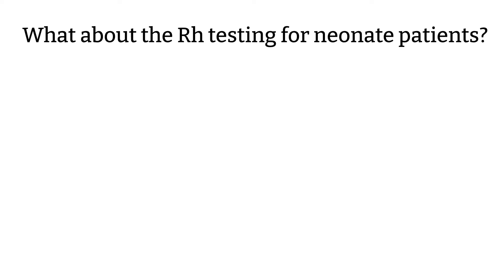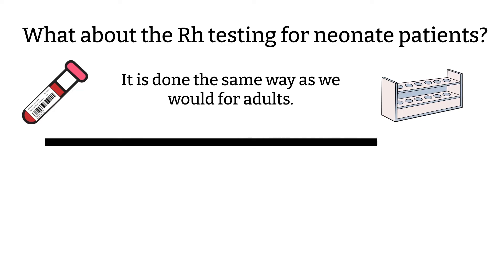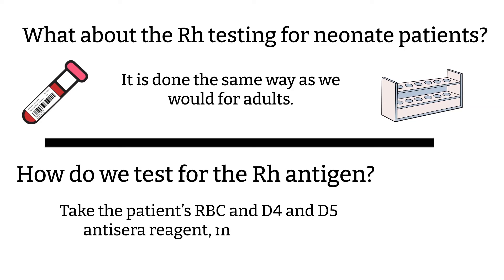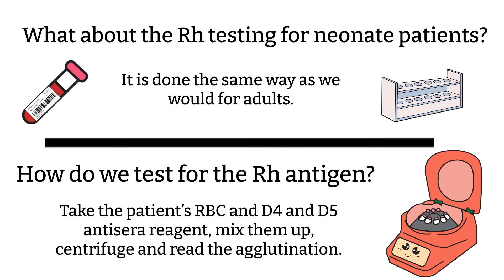Now what about the Rh testing for neonate patients? The test is done the same way as we would perform for the adult, because the Rh test is testing the antigen that is on the patient's RBC. The Rh antigen expressed at birth may not be the same strength as in adults, but we are able to detect them. We would take the patient's RBC and D4 and D5 antisera reagents, mix them, centrifuge, and read the agglutinations. If the patient is Rh positive, then it ends there. If the initial test shows that the newborn patient is an Rh negative patient, we would have to perform additional testing, which is the weak D test. This test is to make sure that the patient is truly Rh negative and not that the initial negative result was due to weak expression of the Rh antigen. If you want to know the process on how to perform weak D, let me know.